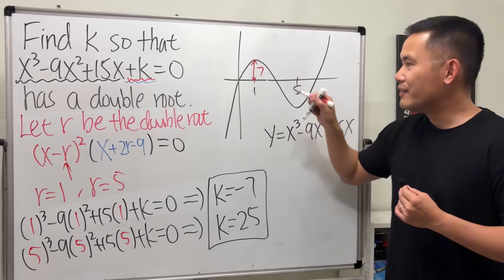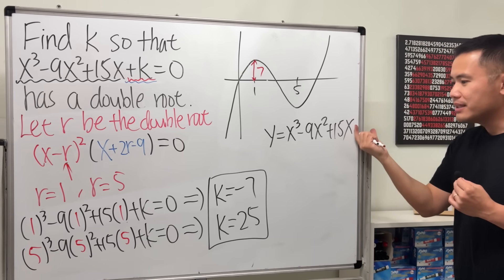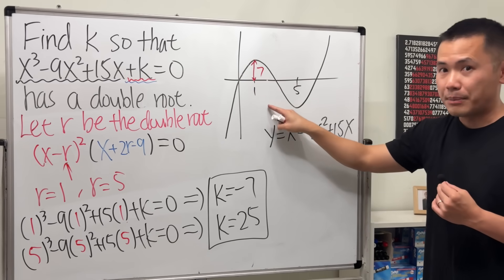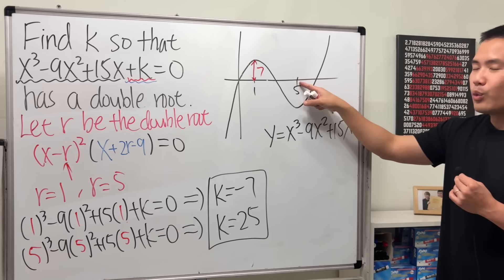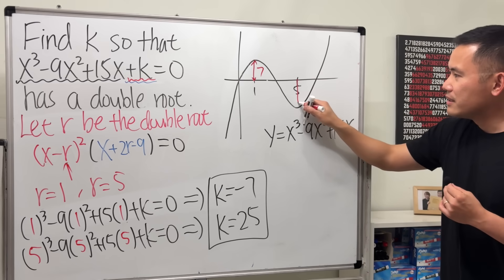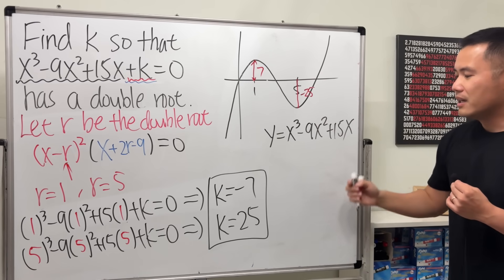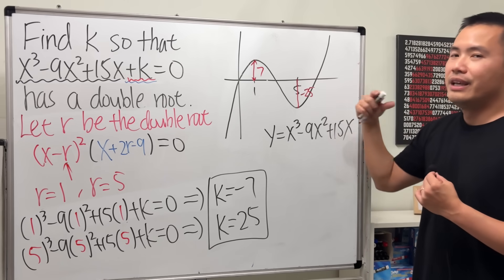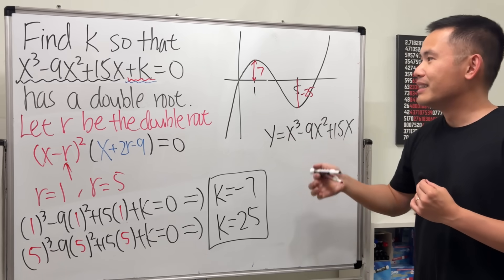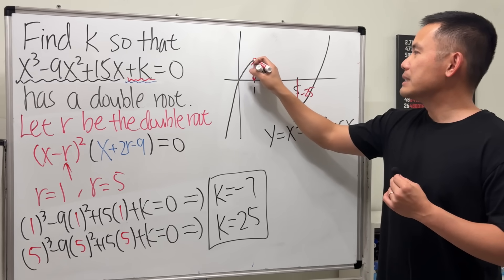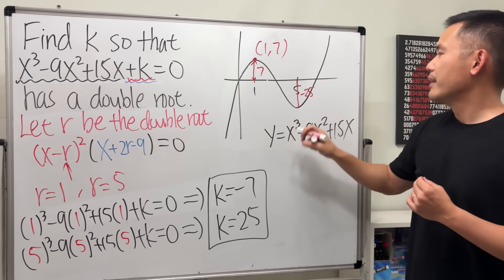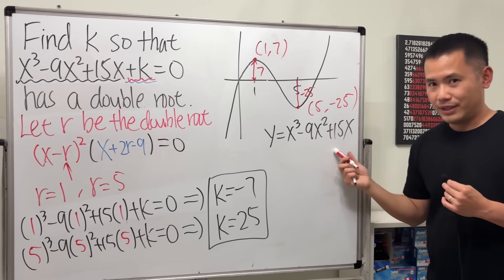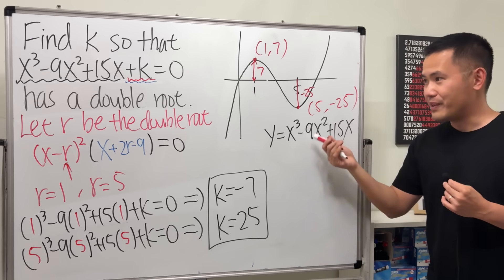It must be 7, because if you add k to it, k will have to be -7 in order to drag this down so that you get a double root at 1. Similarly, when x = 5, this distance here must be -25, because k was positive 25, meaning you will have to bring this graph up 25 times in order to make this a double root. So as you can see, we have a local maximum here at (1, 7) and a local minimum here at (5, -25) for this function. No calculus needed—very cool, isn't it?